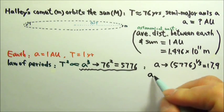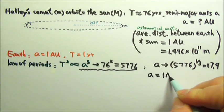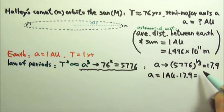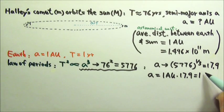So that means the new value is the old value times the factor by which it changes. So the semi-major axis of the Halley's Comet's orbit is 17.9 AU.